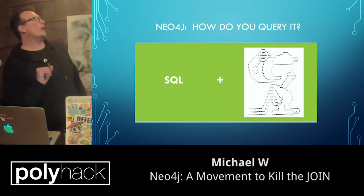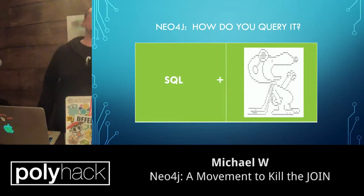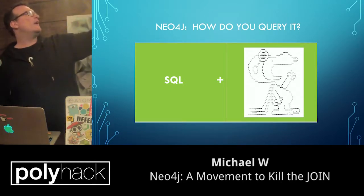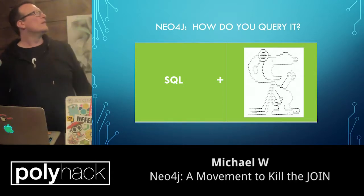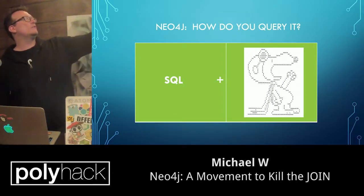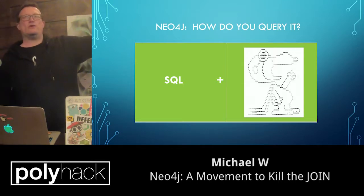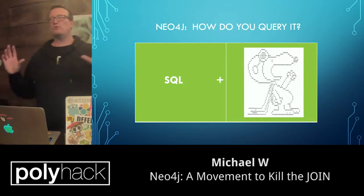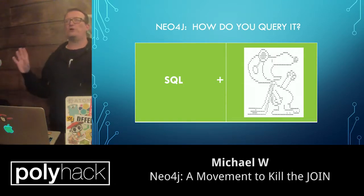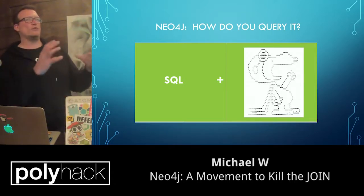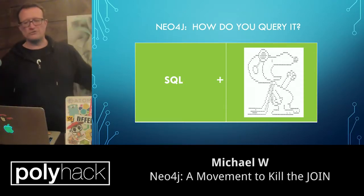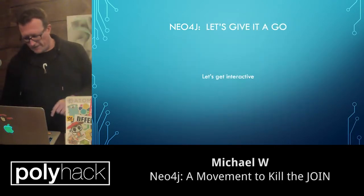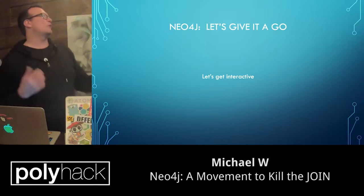How do you query it? Well, it's very simple. You query it as a combination of SQL and ASCII. The way they did it, you actually query it literally using SQL and something which looks like ASCII art. So you're literally representing each node with round brackets, curly brackets for properties and so on. It's kind of cool. We'll see it now because we're going to get interactive.